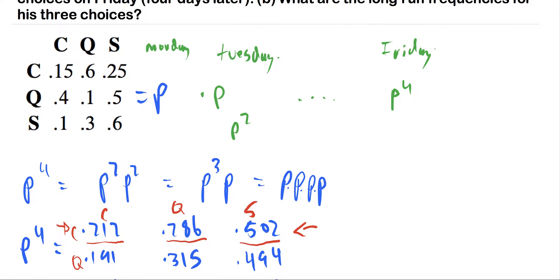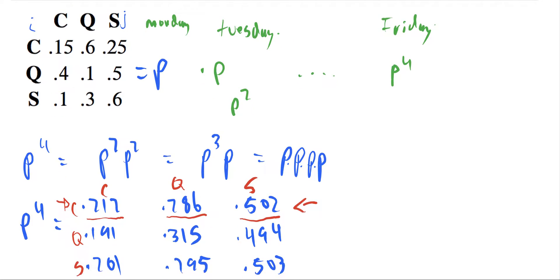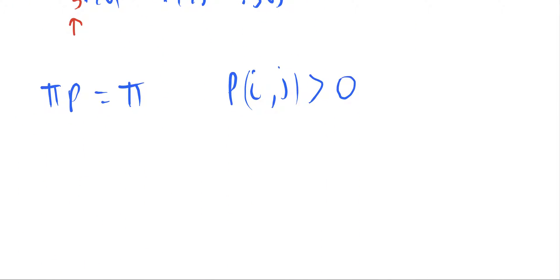From any i over here to any j over here, we have a probability of greater than zero. So we're set, so it's satisfied here. So this chain should converge to some kind of equilibrium given this definition.